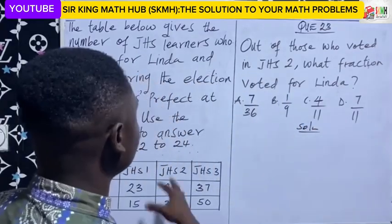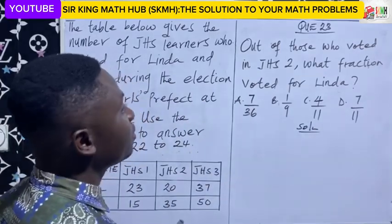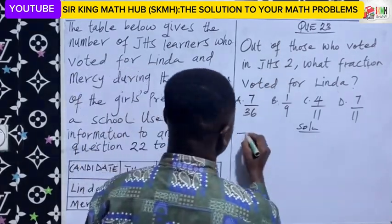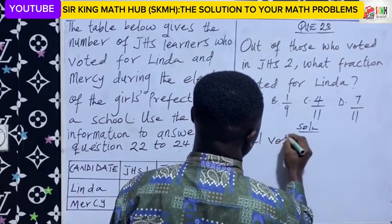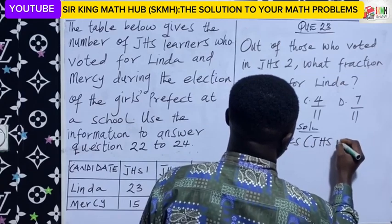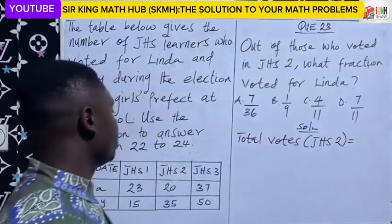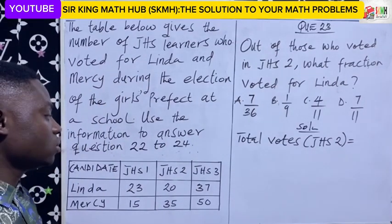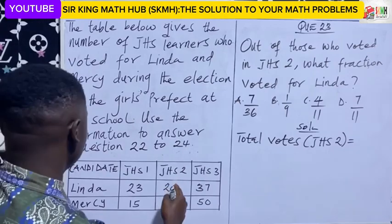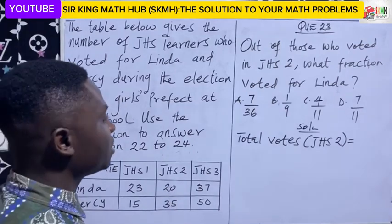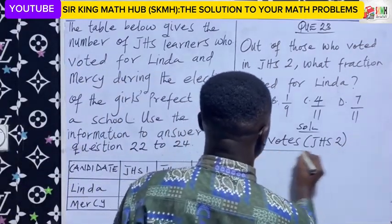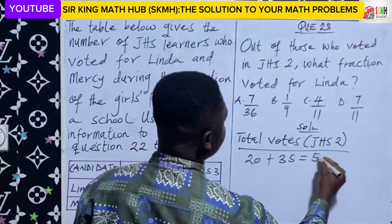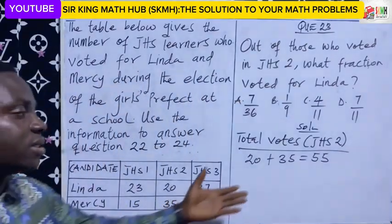First of all, let's calculate the whole. The whole here is the total votes cast in JHS2. From the table, in JHS2 you have 20 plus 35, which gives us 55. So the total votes cast in JHS2 is 55.